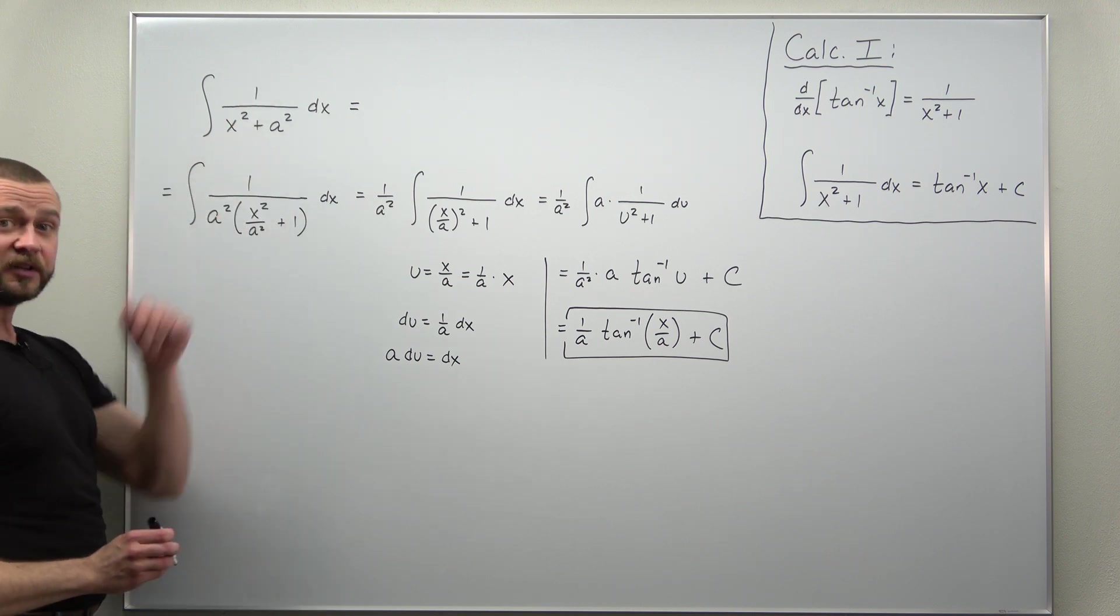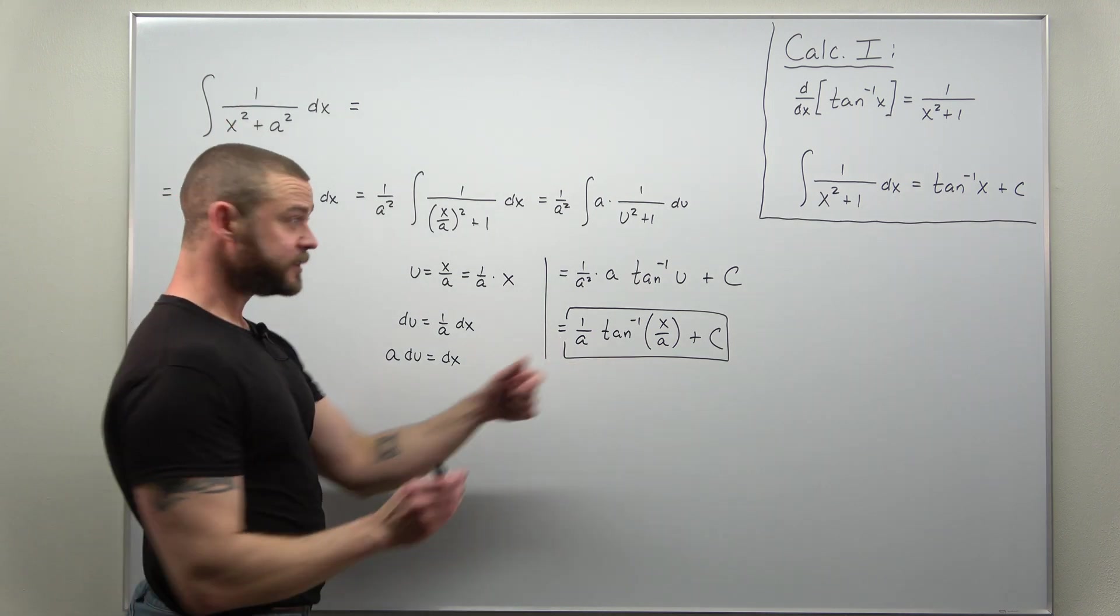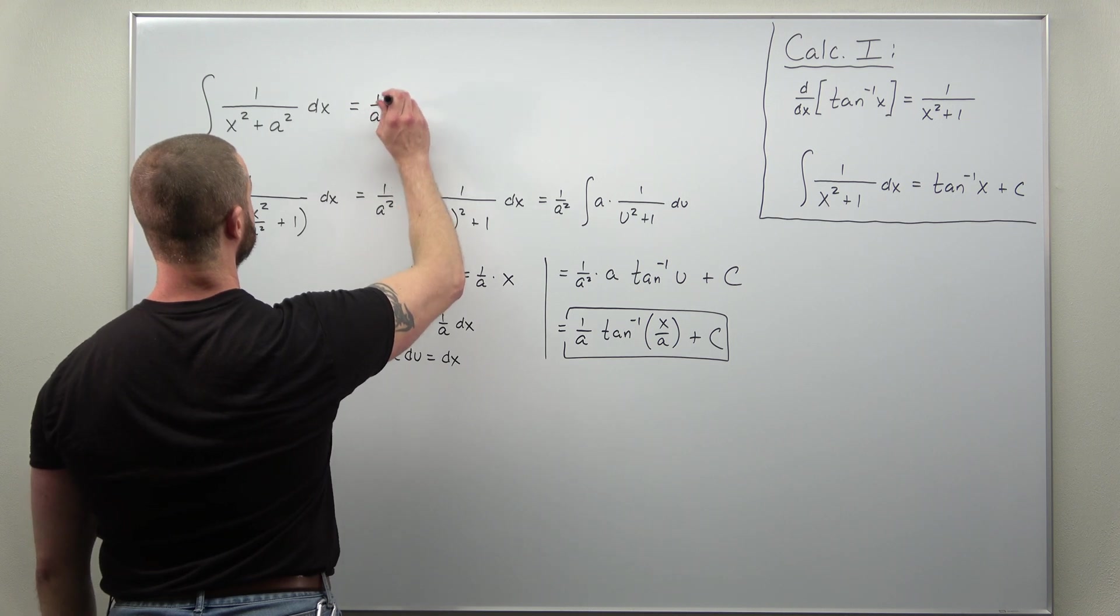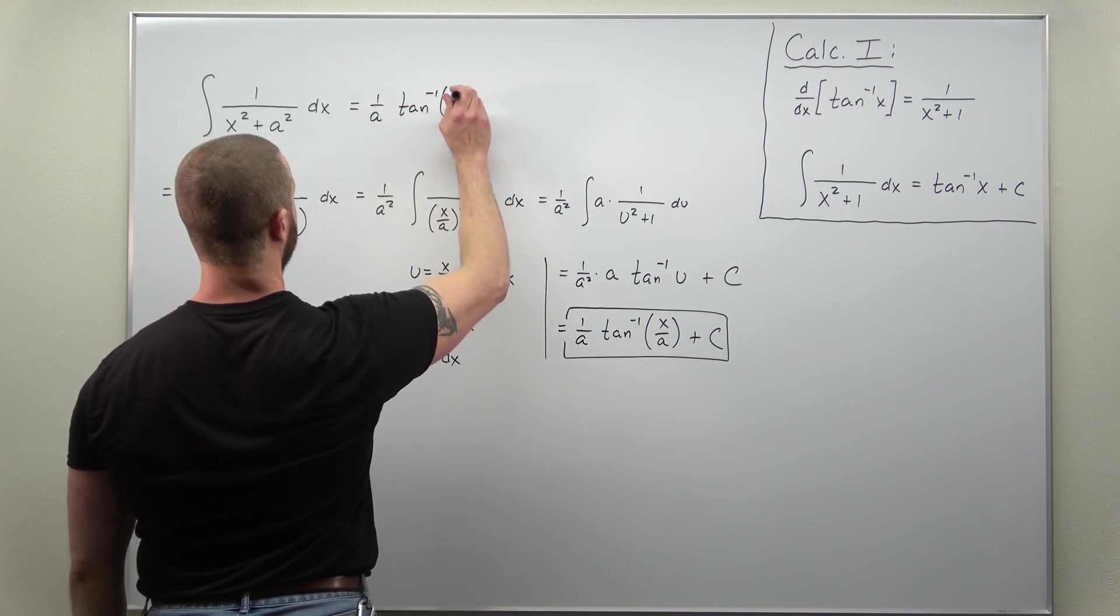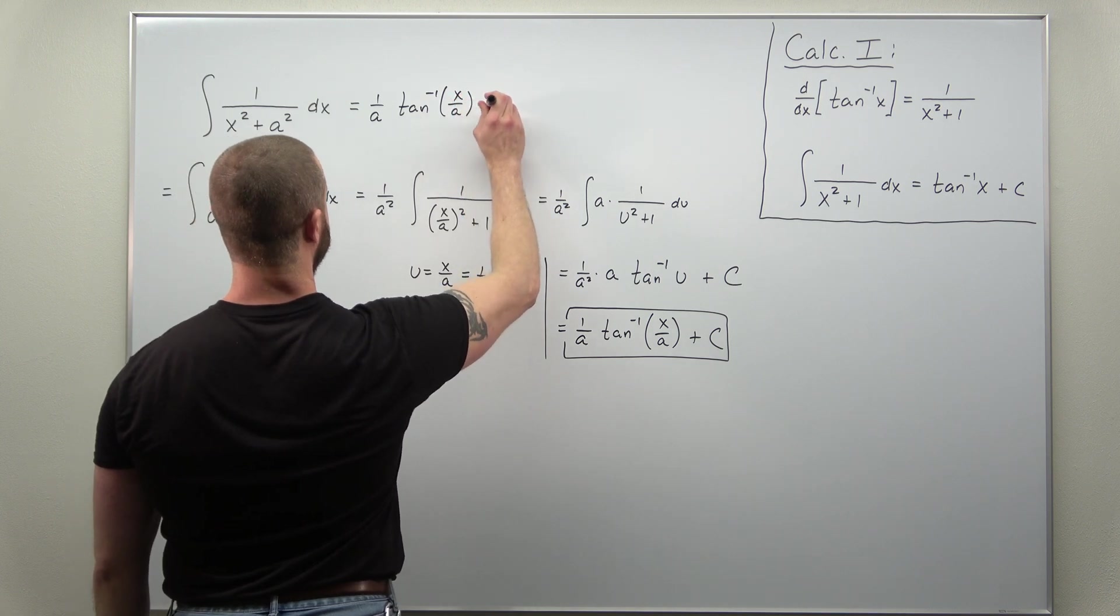So just to state it here, your basic function that you're integrating: 1 over x squared plus a squared. We get our antiderivative: 1 over a times inverse tangent of x over a.